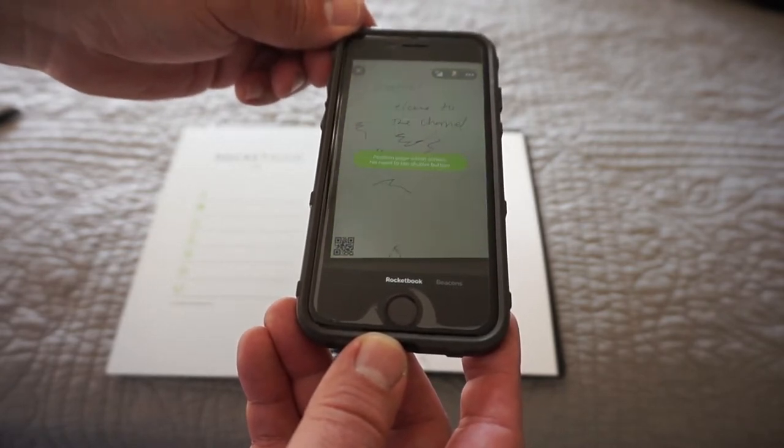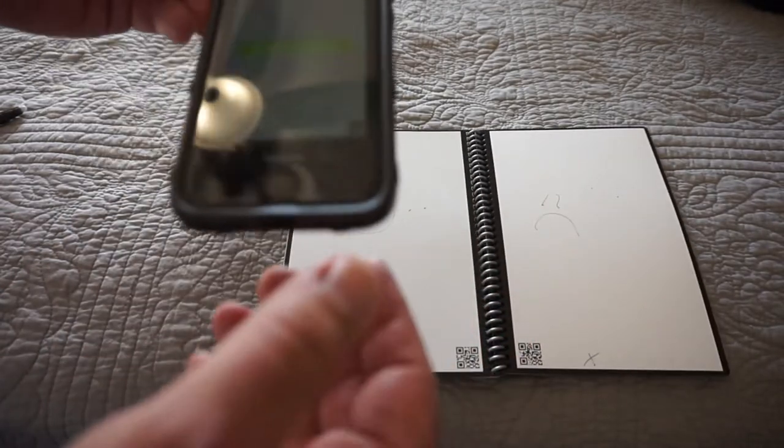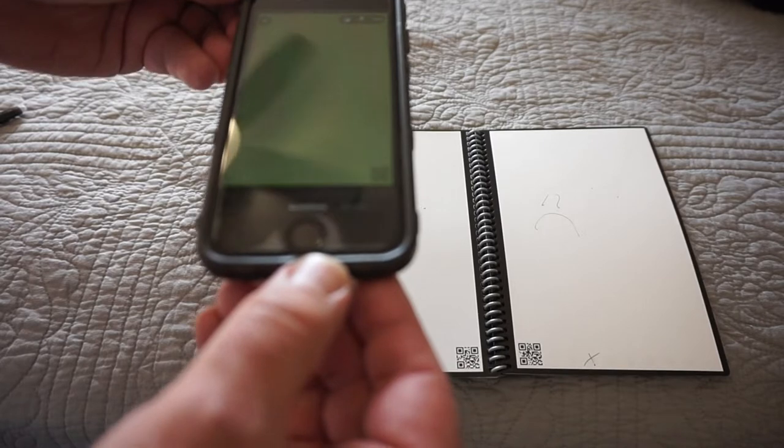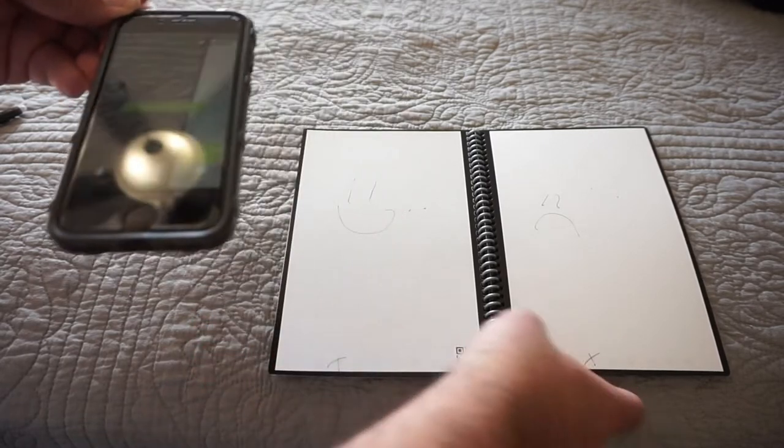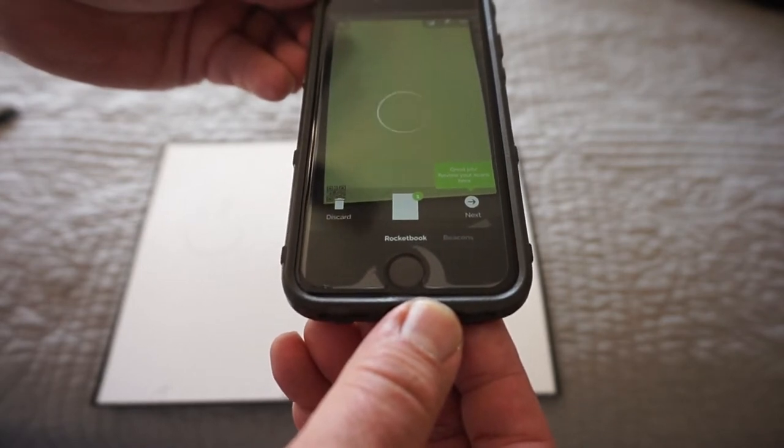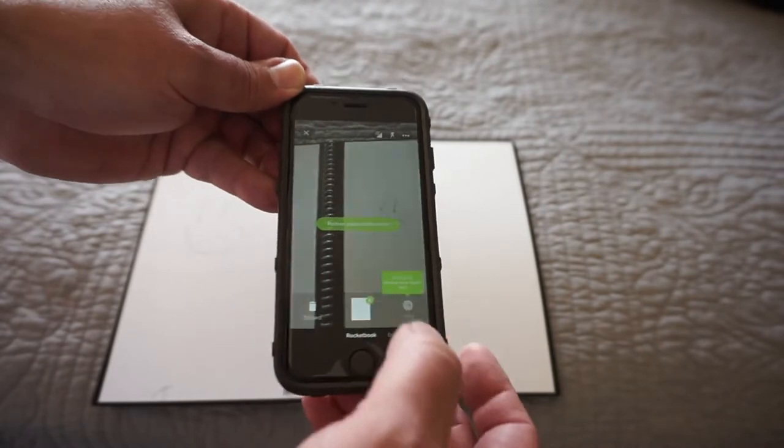There we go. So it automatically clicked. Let's go ahead and do the next one. Like I said, there's a little QR code in the corner, so I'm not sure if that's what it's reading or what it's doing. And I've got kind of just low light in the room that I'm working in right now. It says, great job. Review your scans here. So we're going to press next.